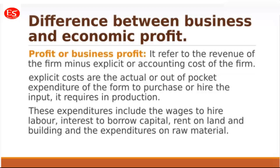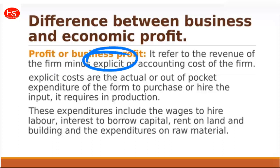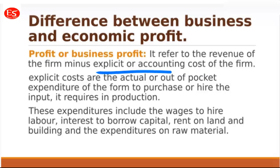Let's start with the difference between business and economic profit. Business profit refers to the revenue of the firm from which we subtract the explicit cost, also called accounting cost, of the firm. When we subtract the explicit or accounting cost from revenue, we get the business profit.